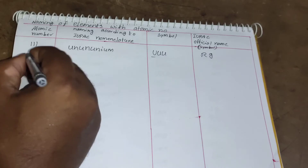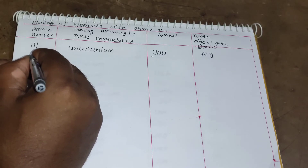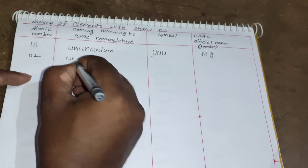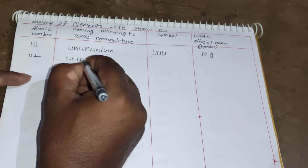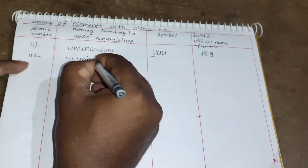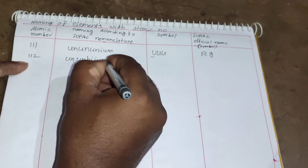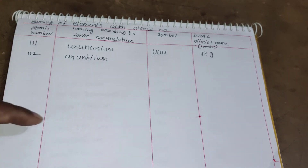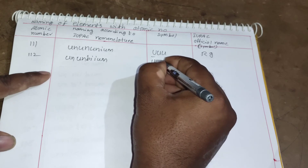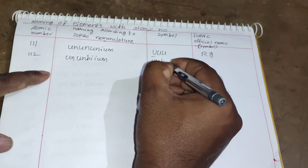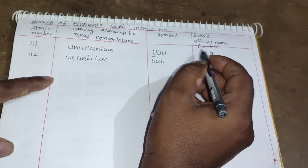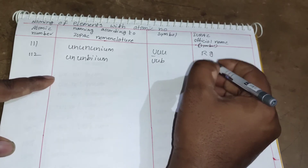For element 112: 1 = un, 1 = un, 2 = bi, plus '-ium' gives Ununbium. The symbol is Uub. The IUPAC official name is Copernicium, symbol Cn.